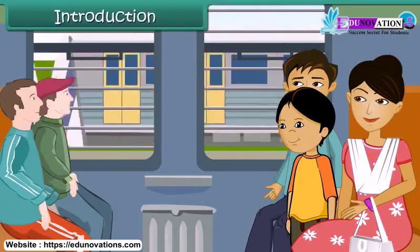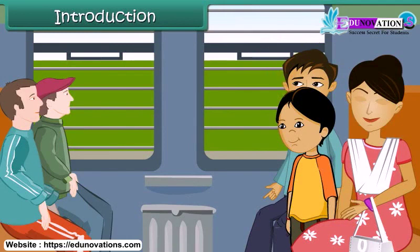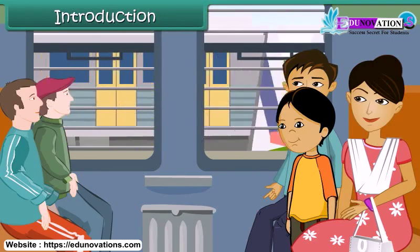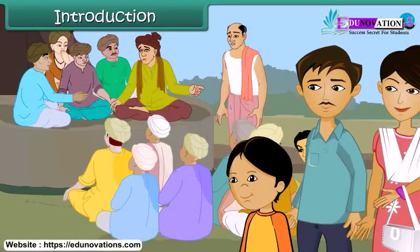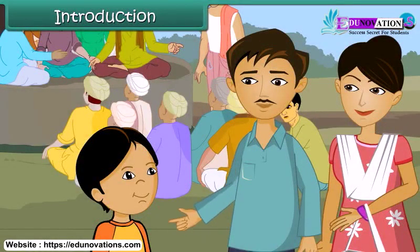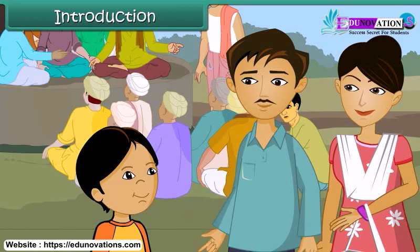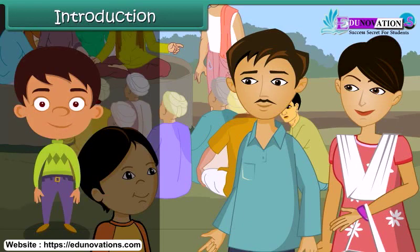Bari lives in a city with her parents. She is going to a village in summer vacations where her grandparents live. This is the first time she is visiting an Indian village. On the way from the railway station to her grandparents' house, she finds a group of five elderly people sitting under a banyan tree, listening to some men standing in front of them. Her father tells her that the elderly men are members of the gram panchayat and are solving some problem of the villagers. In this lesson you will learn about the working of gram panchayat.